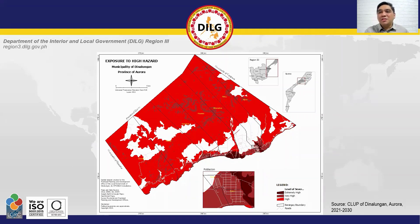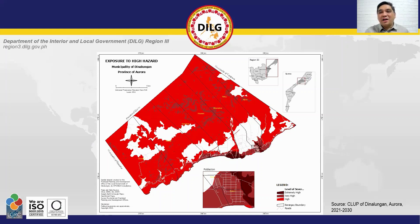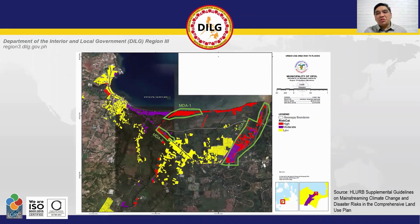There are two effective ways to generate the major decision areas map. The first is by overlaying all the hazard maps with only high susceptibility. In this example, the red areas are highly susceptible to one hazard, the maroon areas are highly susceptible to two hazards, and the dark areas are highly susceptible to at least three hazards. You can consider the areas which are highly susceptible to at least two hazards as the decision areas. The second way is to delineate the boundaries of areas identified by key stakeholders as the decision area in their barangay.